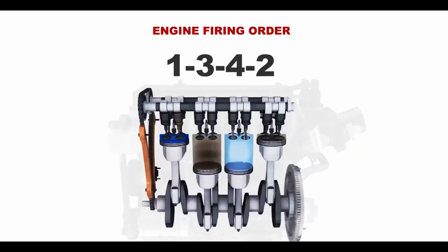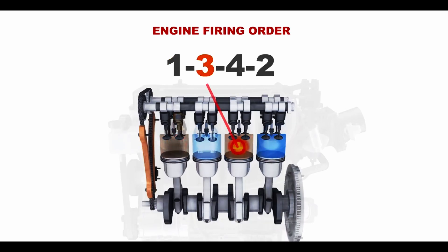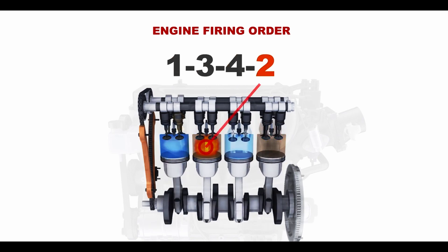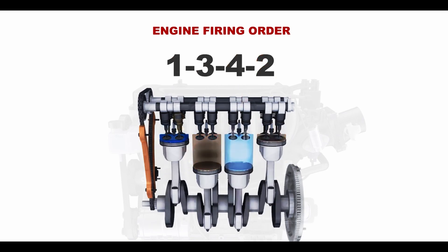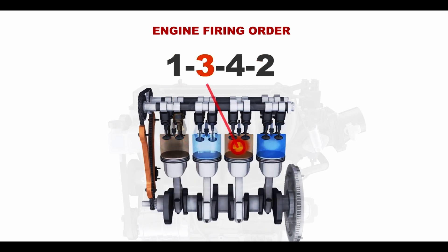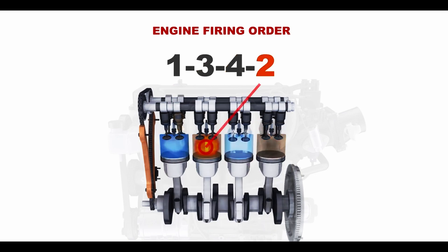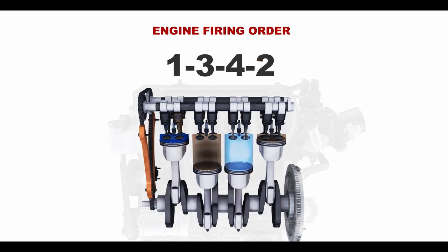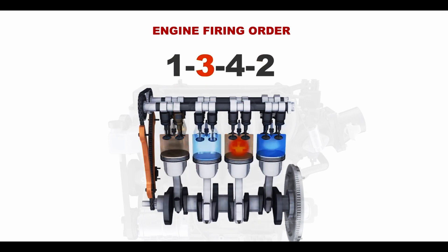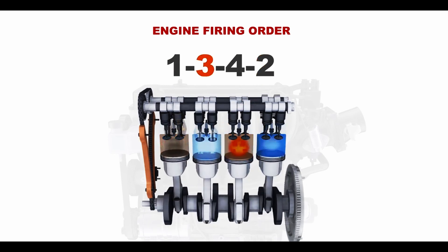The strokes alternate in different engine cylinders in a certain sequence. This is known as the engine firing order and is required for more stable engine operation. The firing order for this engine is 1, 3, 4, 2. It means that the power stroke occurs in the first cylinder, then the third, fourth, and finally the second cylinder. The sequence is then repeated.